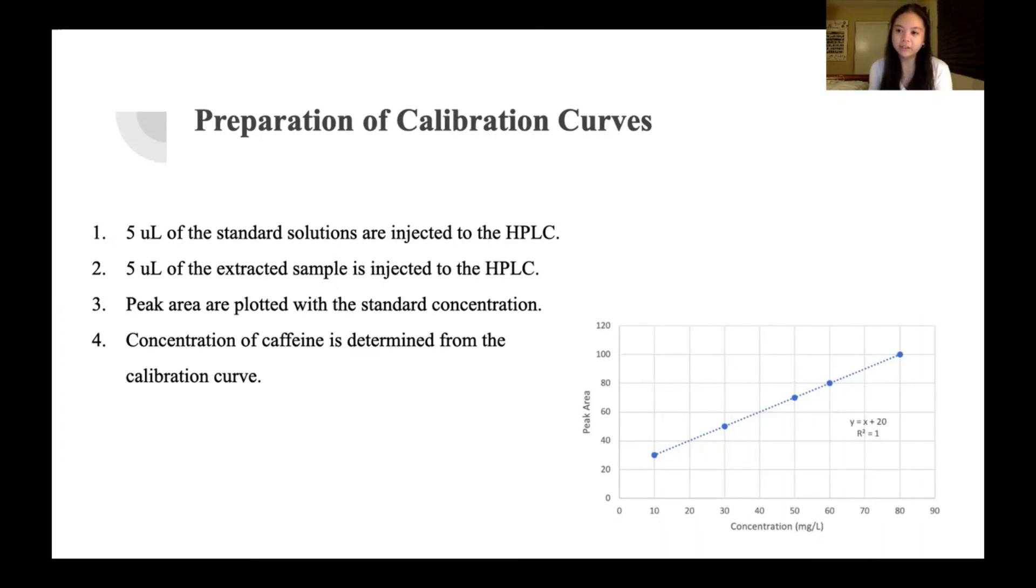To find the concentration of caffeine in coffee a calibration curve will be used. First 5 microliters of each standard solution will be introduced into the HPLC. Then 5 microliters of the extracted coffee sample will be injected. From the standard solutions a calibration curve will be generated with peak area versus the standard concentration. This calibration curve will have a best fit line and using the best fit line along with the peak area of the extracted coffee sample the concentration of caffeine in coffee can be determined. For instance, if the peak area of the extracted coffee sample is about 60 then at the best fit line the concentration of caffeine in coffee would be about 40 milligrams per liter. This is just an example of a calibration curve and this is mock data.